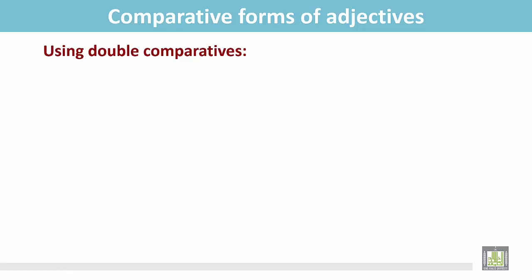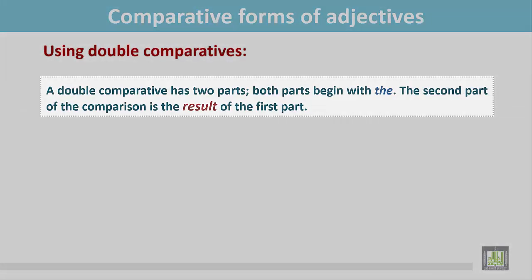Using double comparatives. A double comparative has two parts. Both the parts begin with the. The second part of the comparison is the result of the first part.